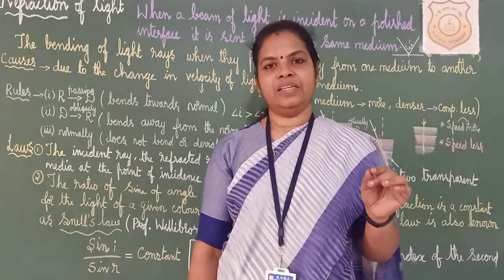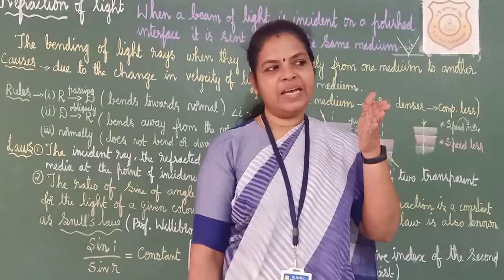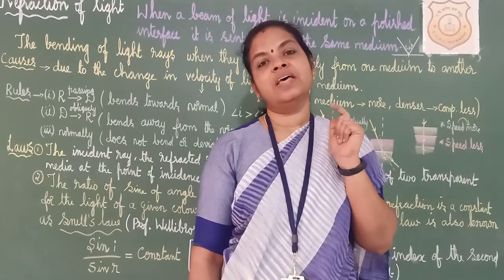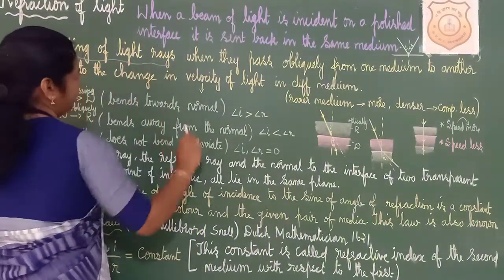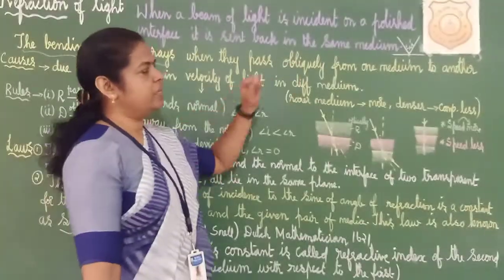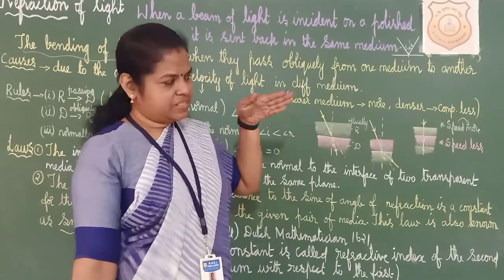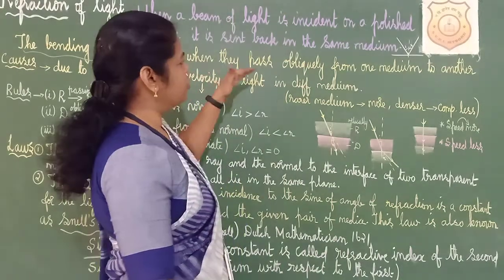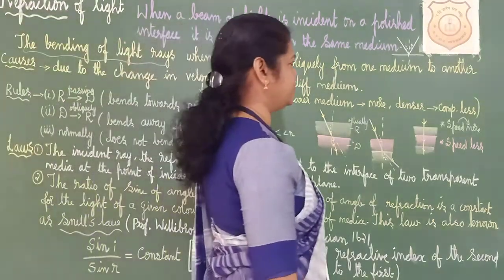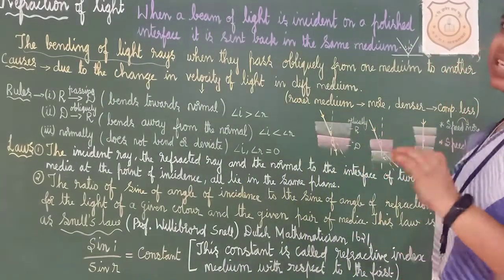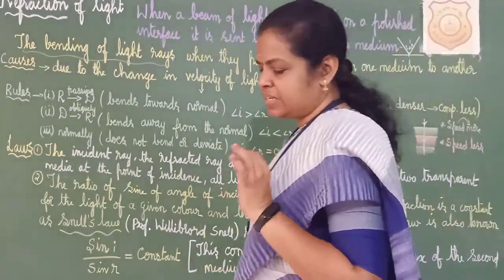So we get a clear idea: light will not always travel in a straight path — sometimes it bends. That is called refraction. The definition: the bending of light rays when they pass obliquely — obliquely means neither parallel nor perpendicular, that is, slanting — from one medium to another is called refraction of light. This definition is very important.